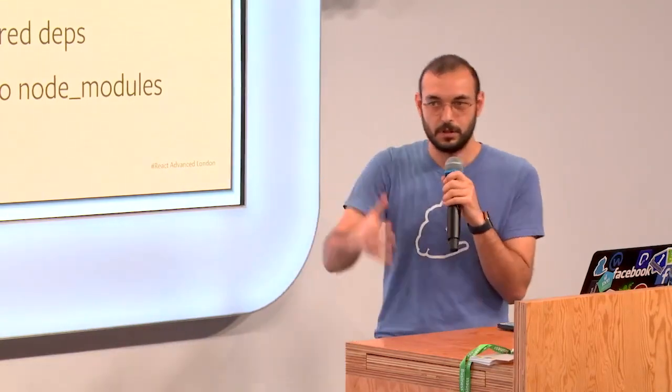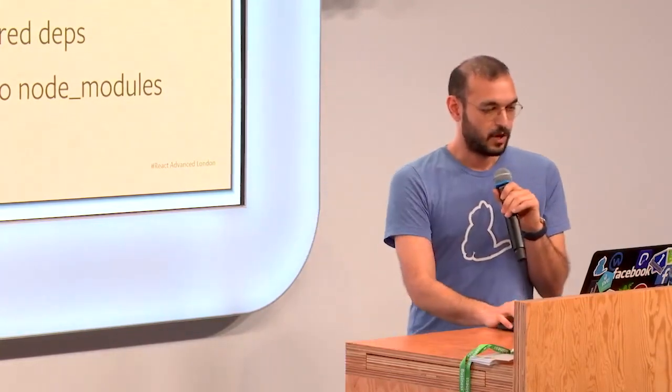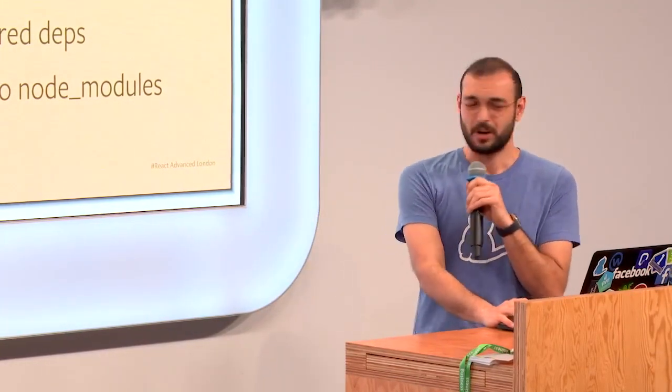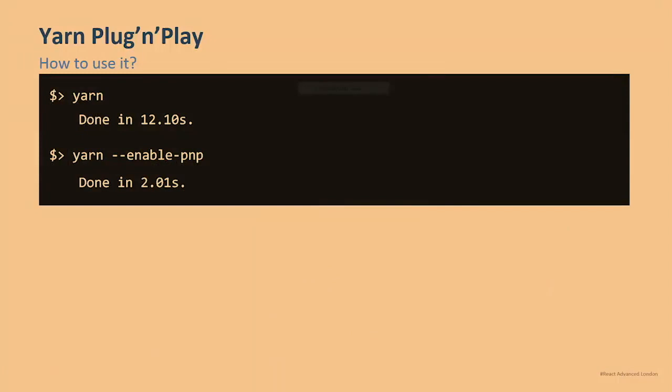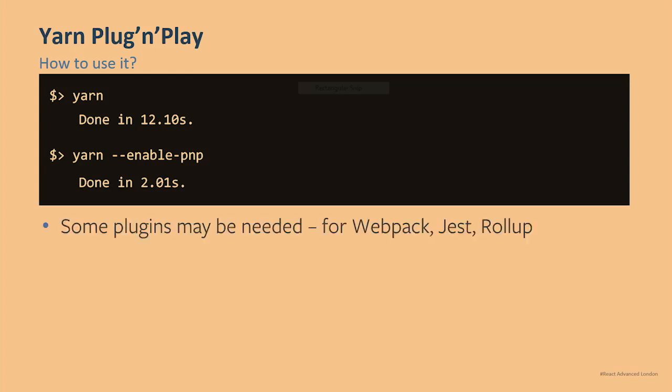So how does it work? It's pretty complicated — you just enable PnP. You can also declare it in your package.json file. Essentially, just enable it and it just works.